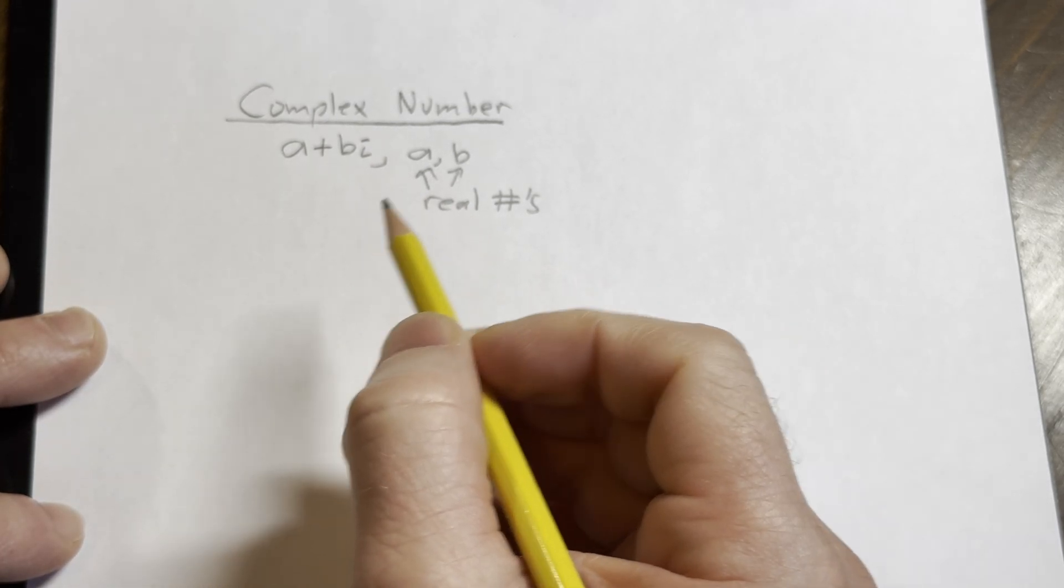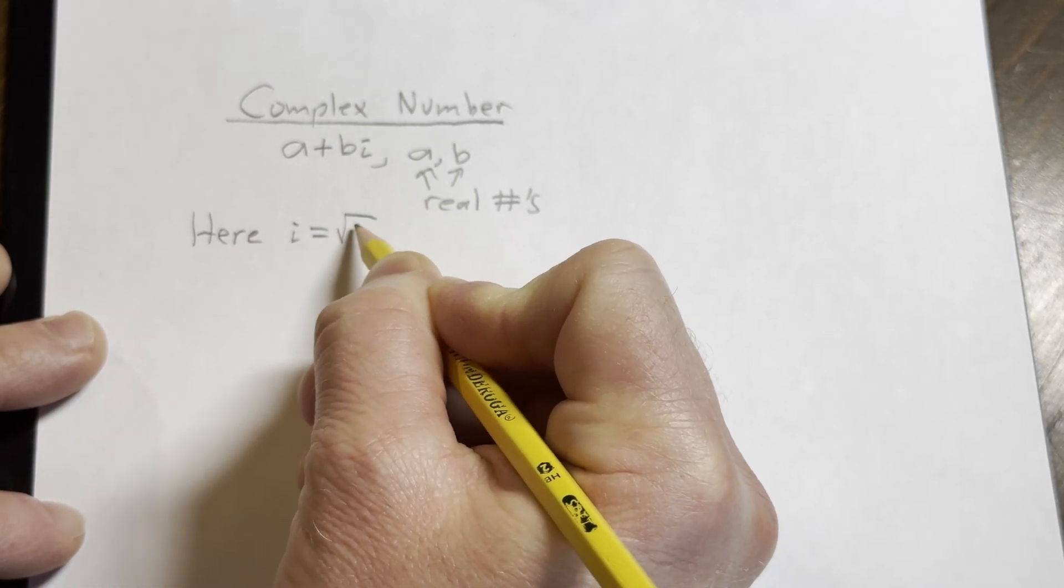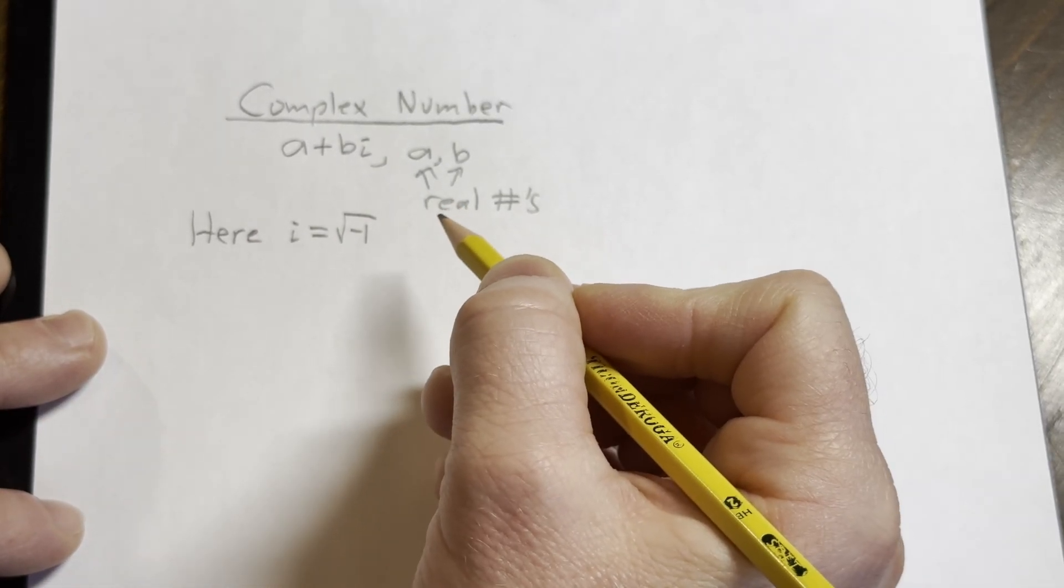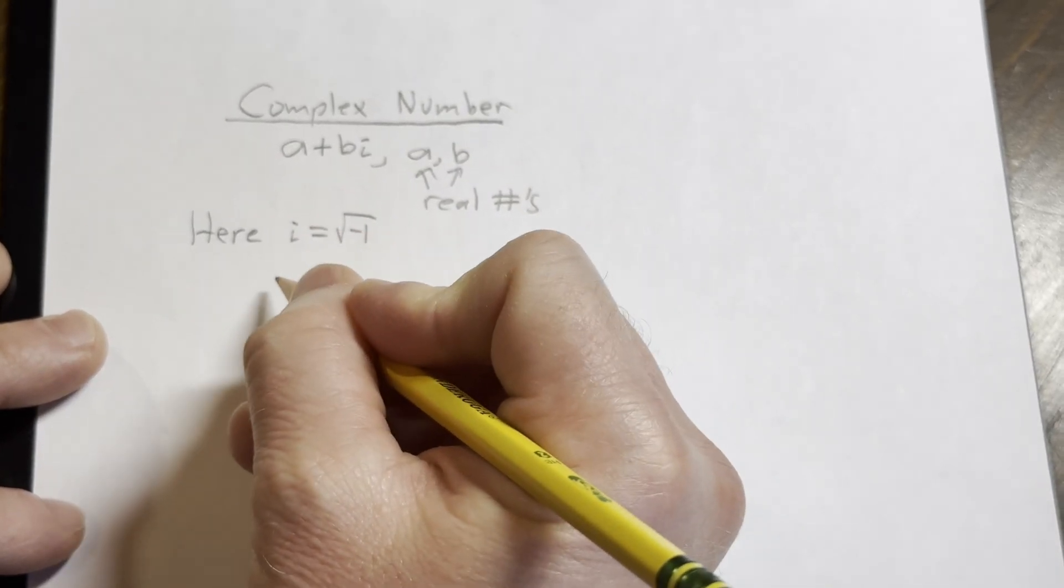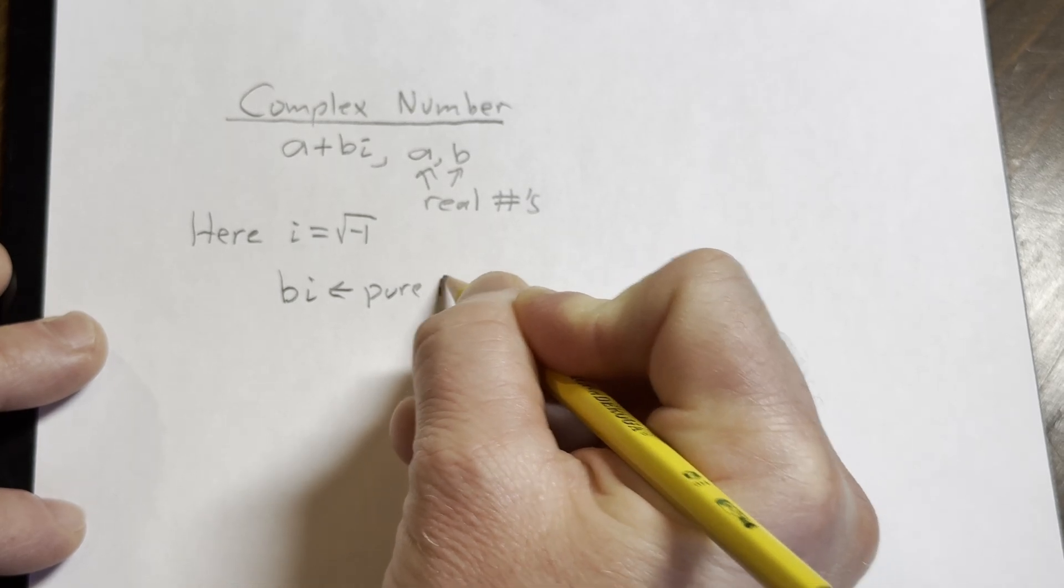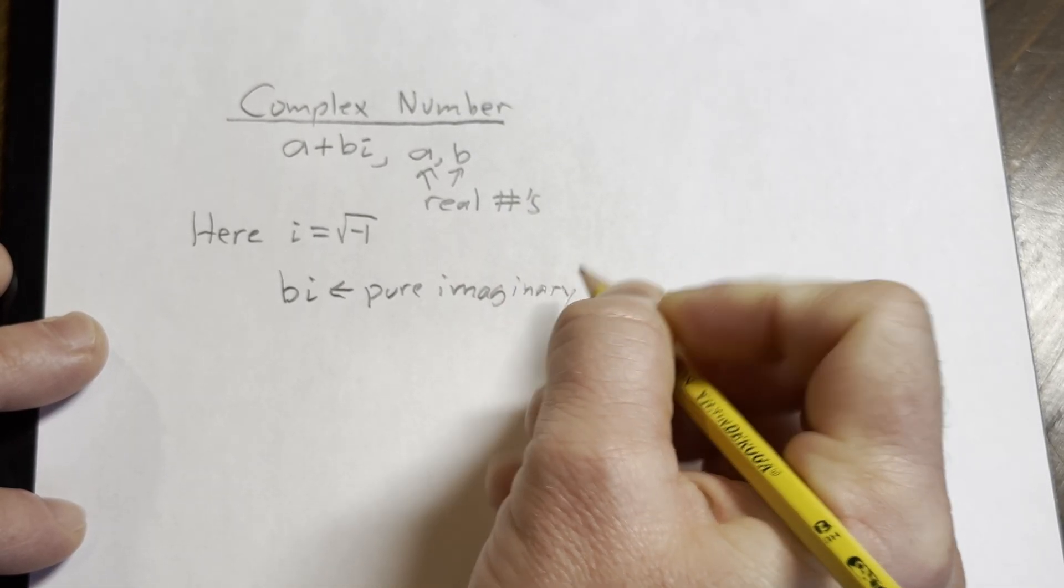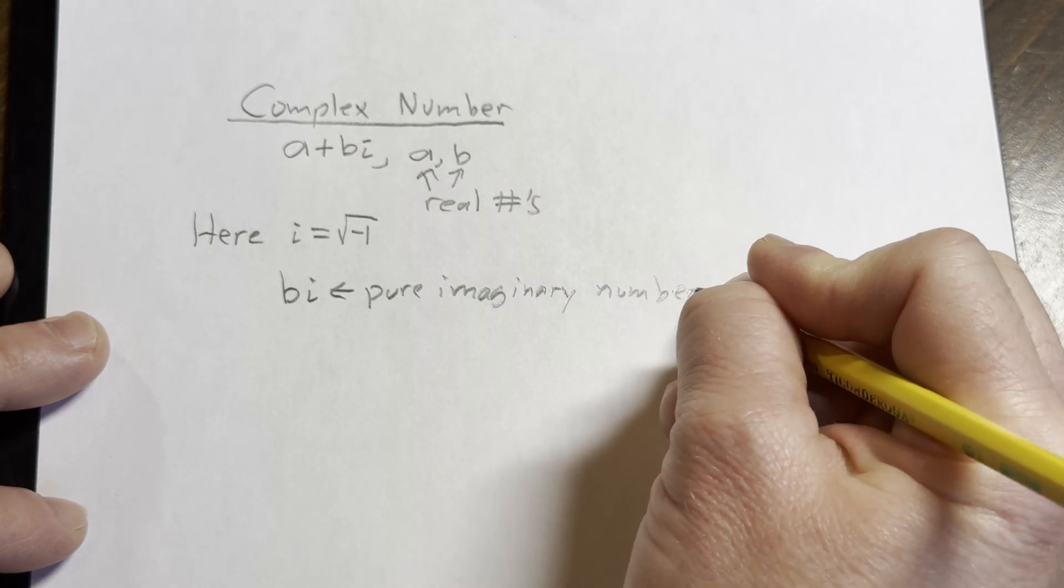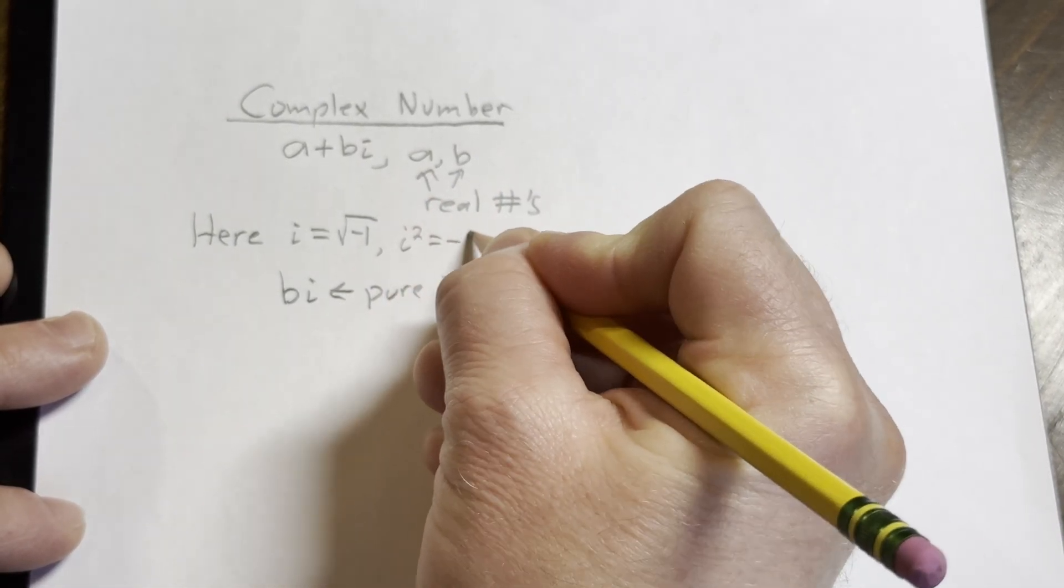You might be saying, well what is i? So here i is defined to be the square root of negative 1. It is sometimes called the imaginary unit. The number bi is known as a pure imaginary number. And also you'll notice i squared is equal to negative 1.